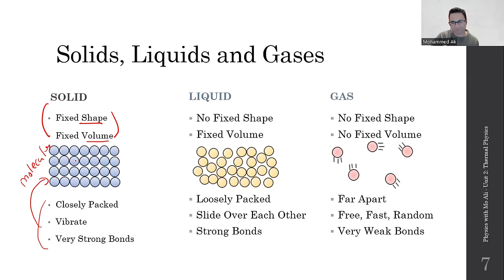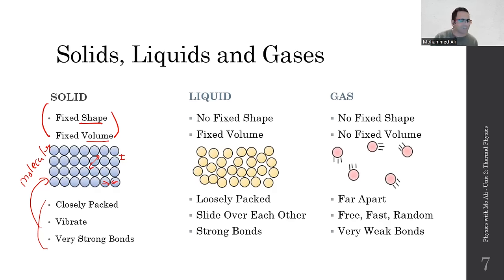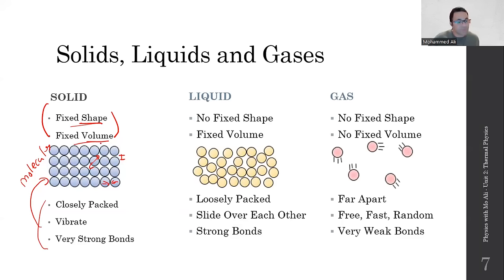All matter will be assumed to be made up of molecules. These molecules are either vibrating in place or moving freely, they have a certain space between them, and they have attractive forces between them which we call intermolecular forces, or simply bonds. On the outside, solids have a fixed shape and a fixed volume. Inside, the molecules are closely packed — very close to each other, very small spaces — and they vibrate about a fixed position. They don't move around freely, and their bonds are very, very strong.